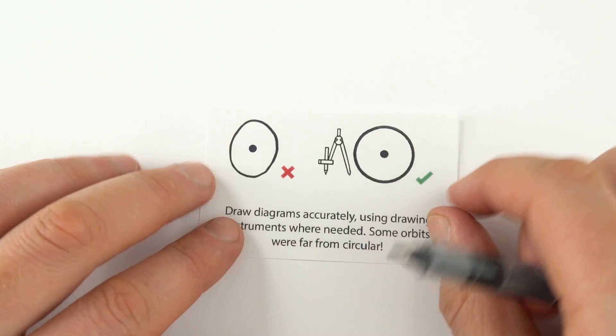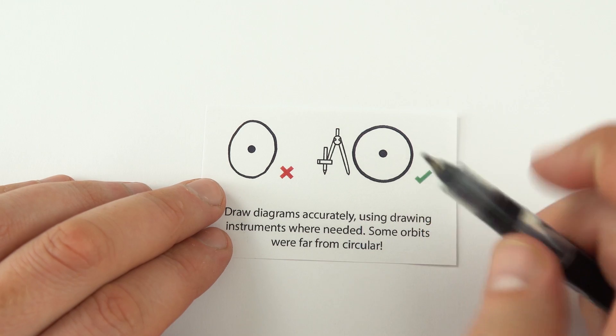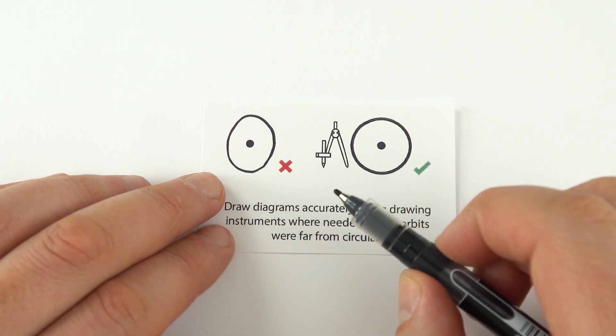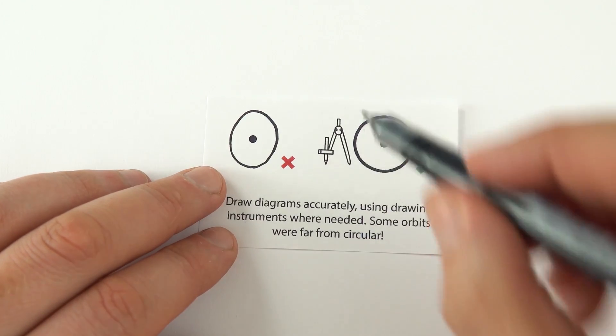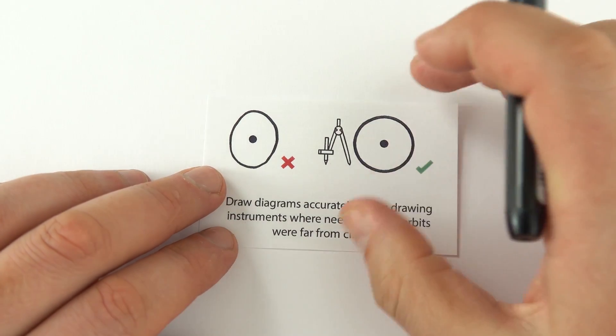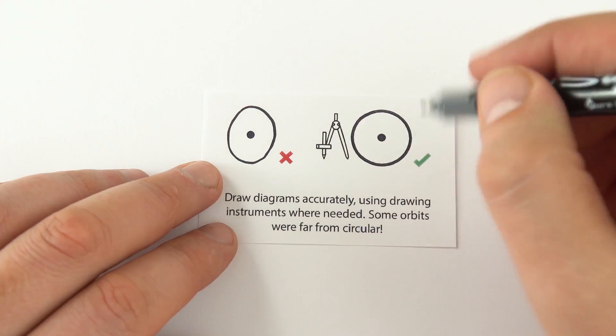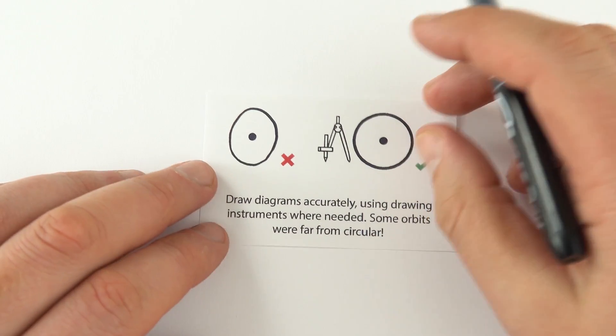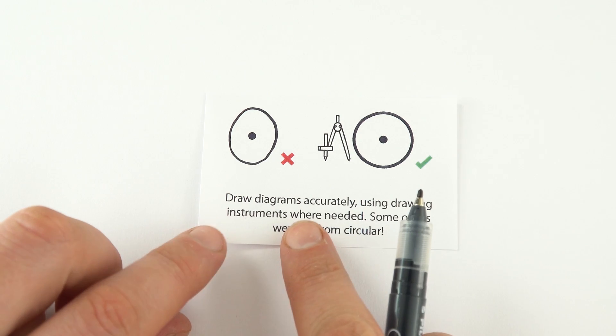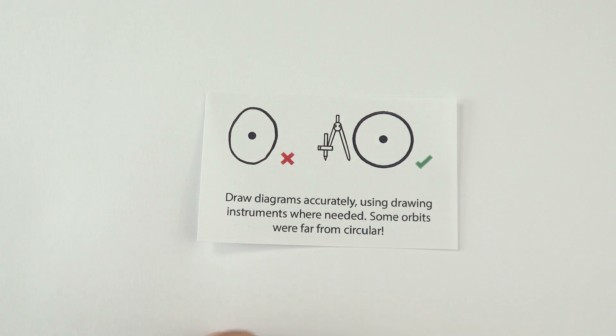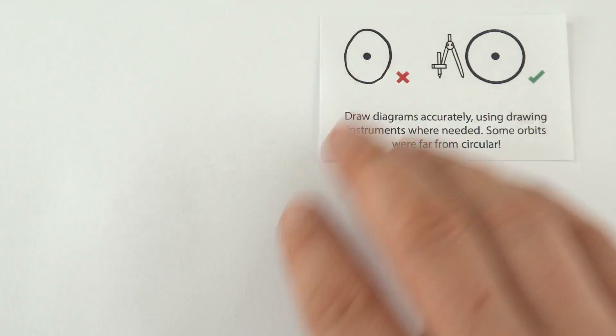Come on people, you're year 12, you're year 13. Draw circles properly. You've probably got a compass somewhere in your pencil case. If not, get one now, put it in your pencil case, and if you're going to be drawing a question, maybe where you've got a circular orbit or something like that, just use this. Even if it's in pencil, you can probably then just leave it in pencil or draw around it in black again. Draw diagrams as accurately as you possibly can. Do I really need to be telling you that?